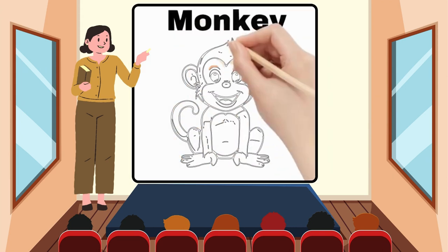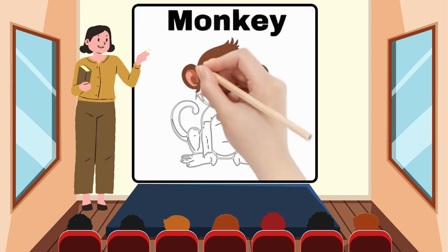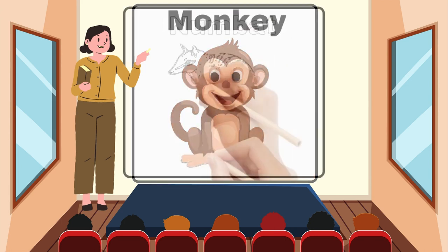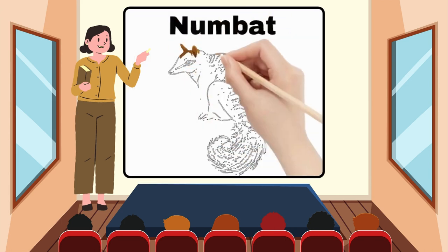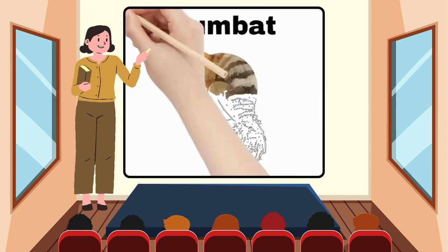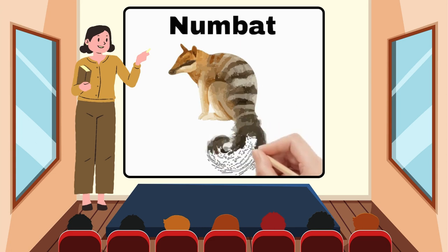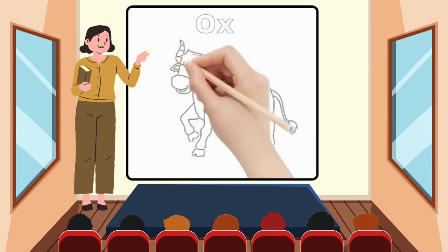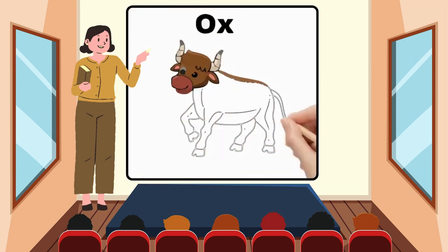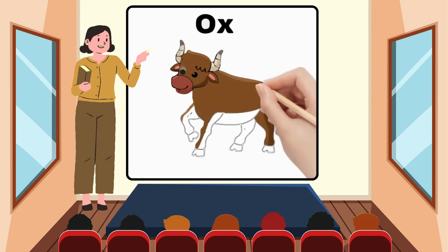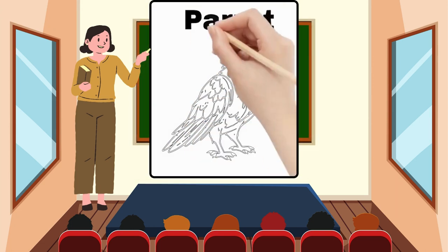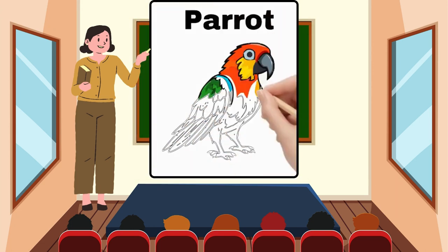M for Monkey. N for Numbat. O for Ox. P for Parrot.